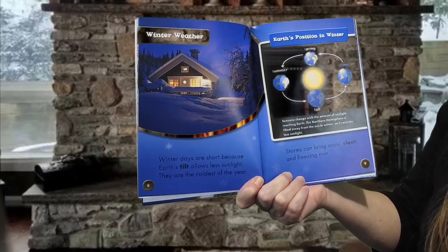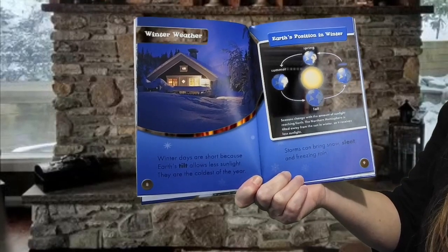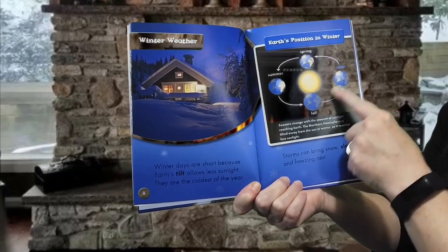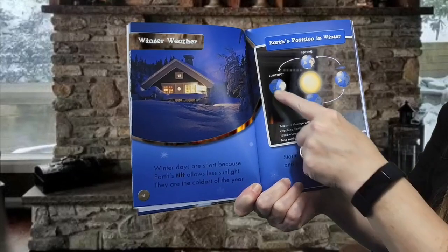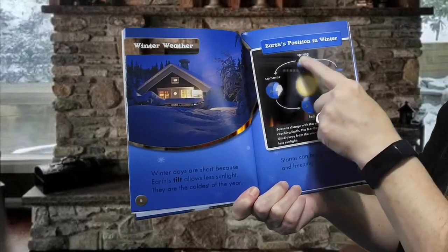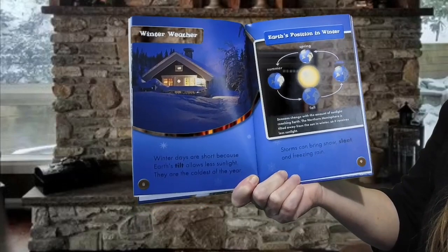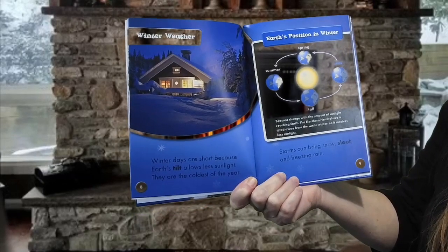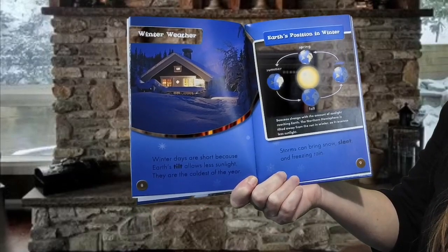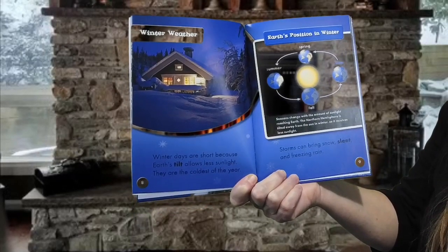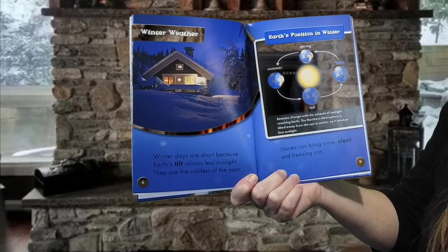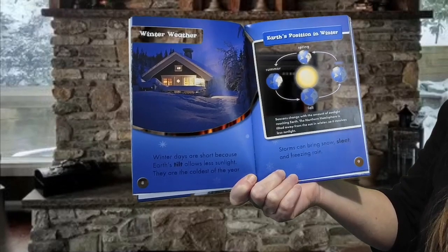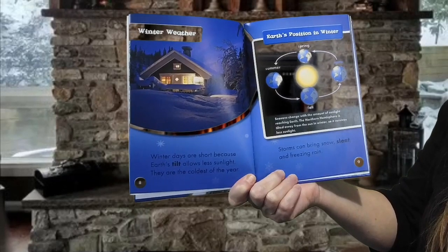Earth's position in winter. Seasons — winter, fall, summer, spring — change with the amount of sunlight reaching Earth. The Northern Hemisphere is tilted away from the sun in winter, so it receives less sunlight.